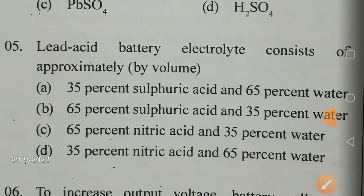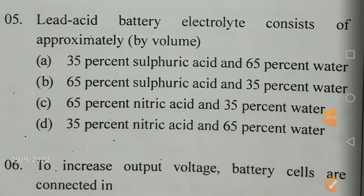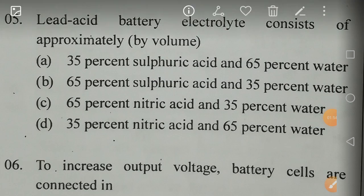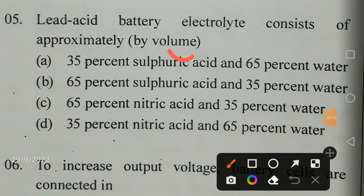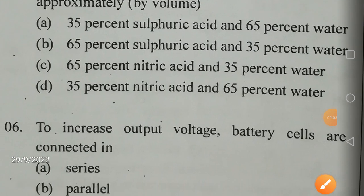Lead acid battery electrolyte consists of approximately by volume — not by mass — sulfuric acid and water. The options given are 35-65 or 65-35, with nitric acid, water, and sulfuric acid as choices. The correct answer is 35% of sulfuric acid (H2SO4) and 65% of water (H2O).